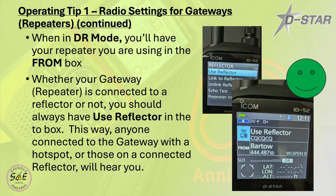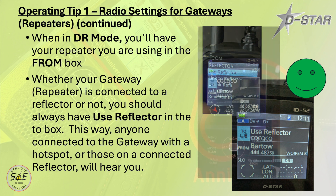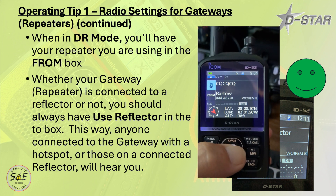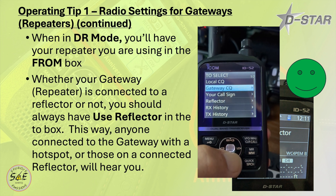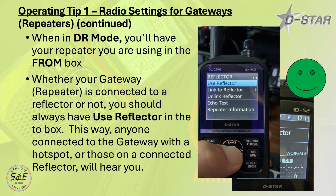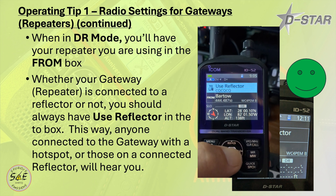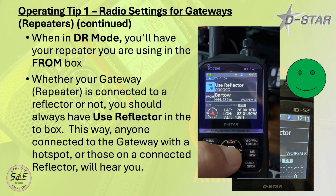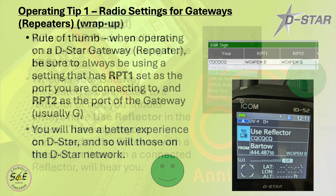When in DR mode using a repeater list, you'll want to make sure your local repeater is in the FROM box, and whether your gateway or repeater is connected to a reflector or not, you should always have Use Reflector in the TO box. This way, anyone connected to the gateway with a hotspot or those connected to a reflector will hear you. As a rule of thumb, always have RPT1 set as the local port you're connecting to and RPT2 as the gateway port — usually G. You will have a better experience on DSTAR, and so will those on the DSTAR network.